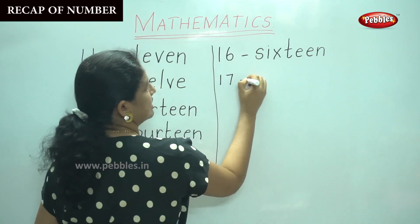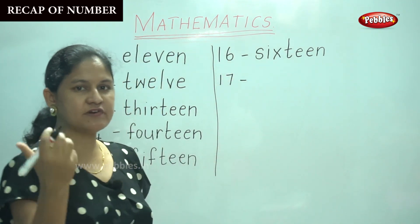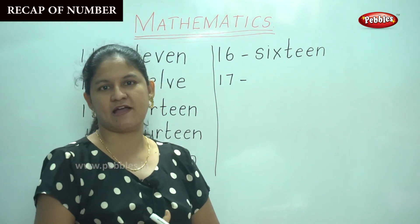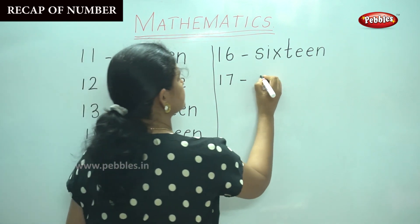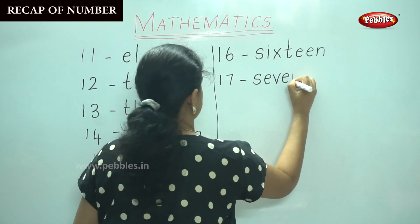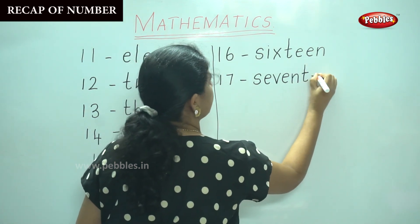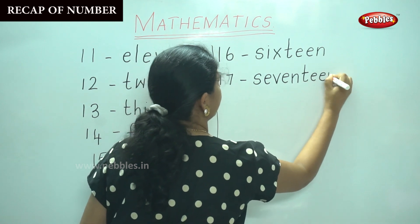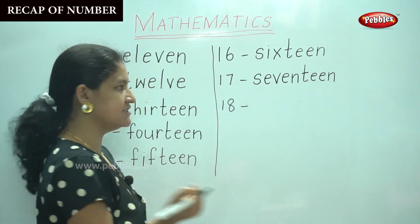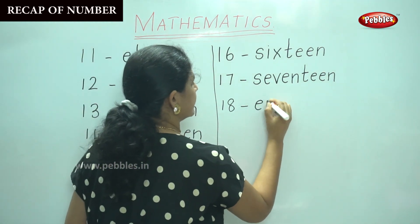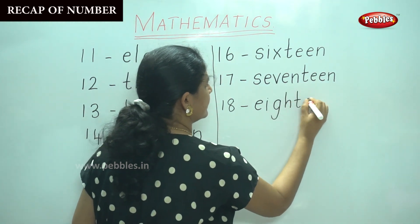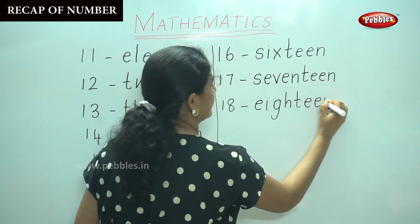17, so you already know the spelling for seven, yes children? So you only have to add the remaining alphabets S-E-V-E-N-T-E-E-N seventeen. 18, the same goes with 18 also, E-I-G-H-T-E-E-N eighteen.